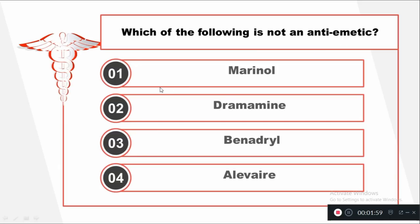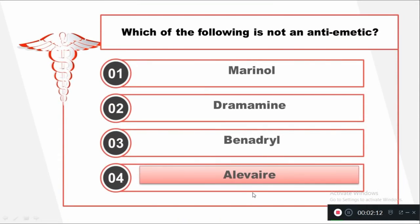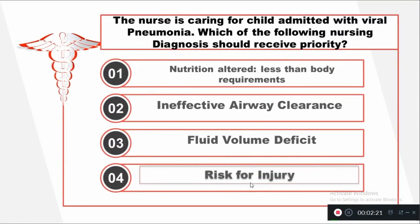Question number two: Which of the following is not an anti-emetic? Option one: Marinol. Option two: Dramamine. Option three: Benadryl. Option four: Alivir. The right answer is Alivir. Alivir is a mucolytic agent, not an anti-emetic.